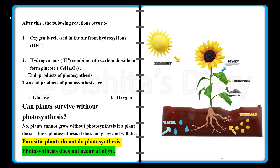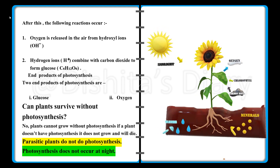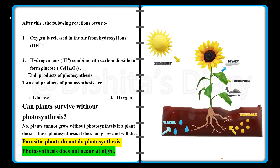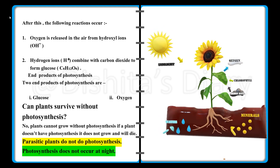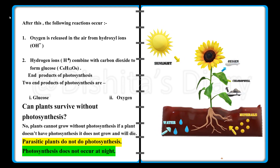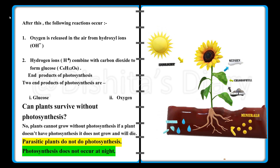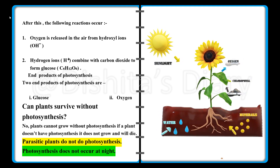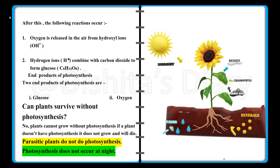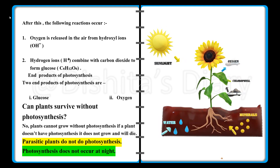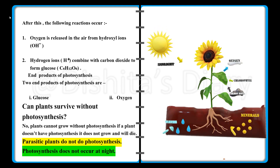The end products of photosynthesis are glucose and oxygen. Can plants survive without photosynthesis? No — plants cannot grow without photosynthesis. If a plant doesn't have photosynthesis, it will not grow and will die.